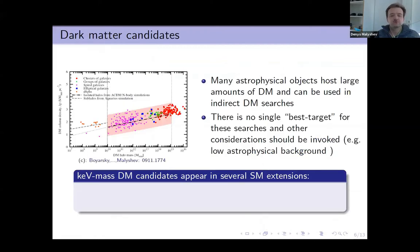We have these three missions and the natural question can arise: what can or what should we observe with these missions? As a matter of fact, many astrophysical objects host large amounts of dark matter and all of these objects can be used for indirect dark matter searches. As a matter of fact, there is no single best target for such searches and other considerations should be taken into account when we are selecting our objects.